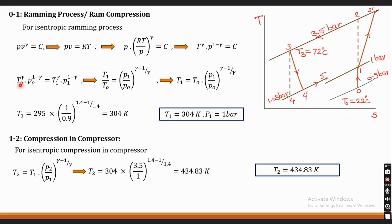For process 0 to 1, the isentropic relation gives T1/T0 = (P1/P0)^((γ−1)/γ). So T1 = T0 × (P1/P0)^((γ−1)/γ) = 295 × (1/0.9)^((1.4−1)/1.4) = 304 K. Therefore, at point 1: T1 = 304 K and P1 = 1 bar.